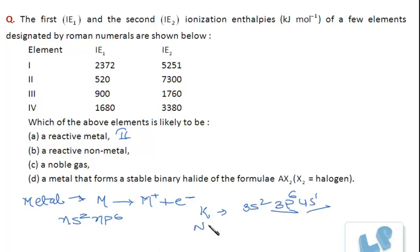If I am taking sodium here, it will be 2S2, 2P6 and 3S1. In this case, the second ionization enthalpy will be very high because the electron is to be removed from the shell which is very close to nucleus. So it is tightly bound to the nucleus.